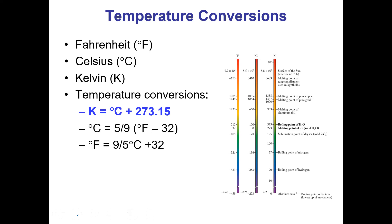The last type of conversion we need to talk about is temperature conversions. There are three units of temperature that are commonly used. Fahrenheit is probably the most familiar — those are the units usually seen in weather reports and on thermometers here in the U.S. Celsius is a more standard unit used by the rest of the world. Kelvin is the SI unit and is considered absolute temperature. At zero Kelvin — absolute zero — theoretically all motion would cease because there would be no energy.